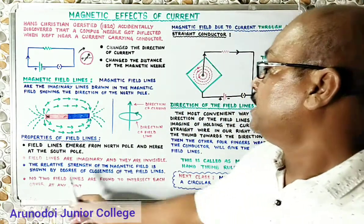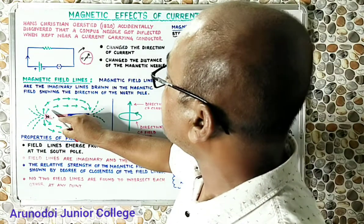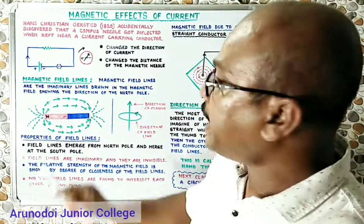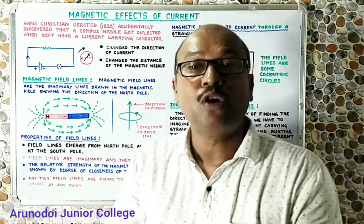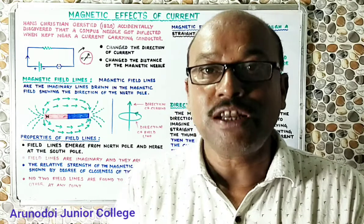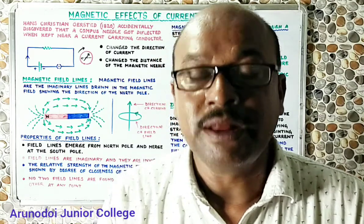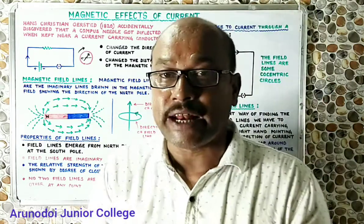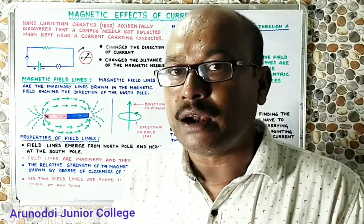The third property: the relative strength of the magnetic field is shown by the degree of closeness of the field lines. All eight magnetic field lines visible are very closely packed at the North Pole, so the strength of the magnetic field is maximum there — where density of field lines is greatest, the magnetic field is very strong. Similarly, the South Pole also has dense field lines, so both poles have very strong magnetic fields.